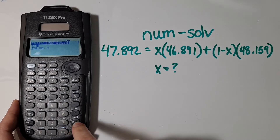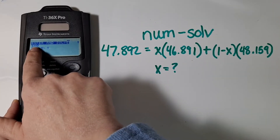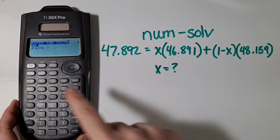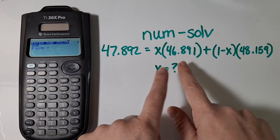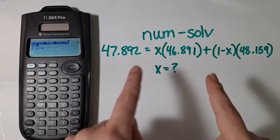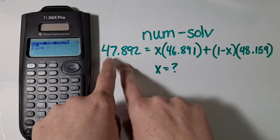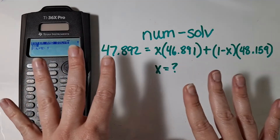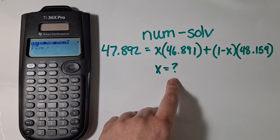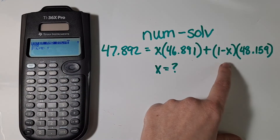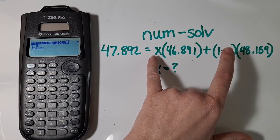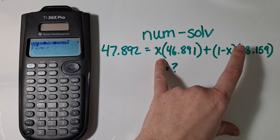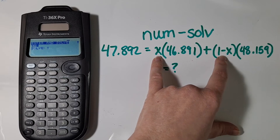Then I hit enter. The next thing I have to do is guess about what x is, because what this is doing is a guess-and-check method above and below to pin down where that is. The closer you guess initially, the less time it takes. I know that my x needs to be between zero and one, because these are going to add up to one.